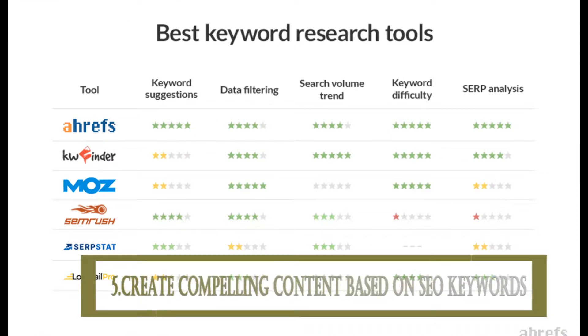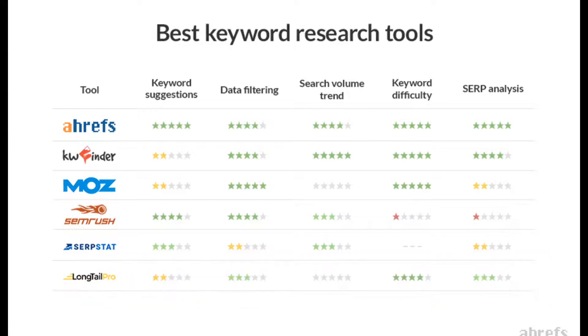The fifth thing you need to do is create compelling content based on SEO — search the most searched words on YouTube and arrange your video title based on those keywords. You can use many keyword finder websites to find the right keywords.